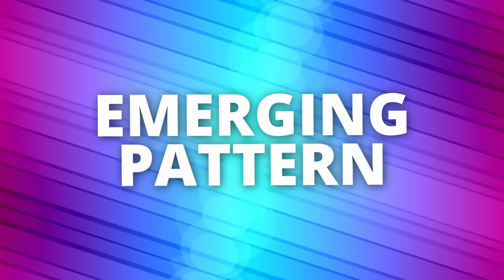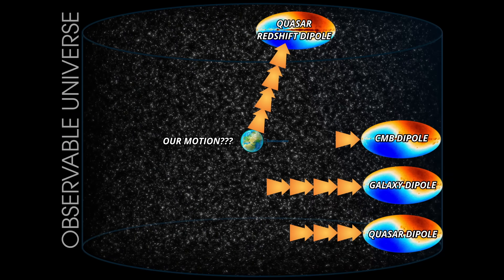Now when you line up all the independent attempts to measure our motion through the universe, what stands out is not the noise, it's the consistency of the disagreement. The quasar count dipoles were the first major warning sign. They didn't agree with the CMB value. Some pointed slightly off the CMB direction. Others were closer. But all of them showed the same underlying problem. The amplitude was too large. Not a little too large, several times larger than expected. Now this new radio analysis removes the methodological issues that we used to dismiss earlier results, and it converges on the same theme. The direction lines up with the CMB almost perfectly, but the implied speed is almost four times higher. It's a cleaner, more robust version of the same tension.